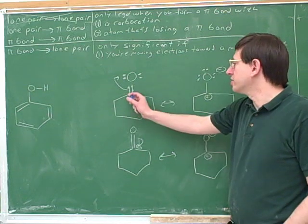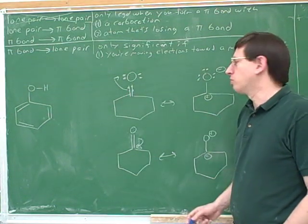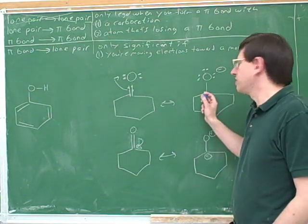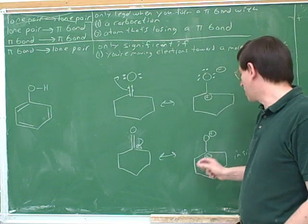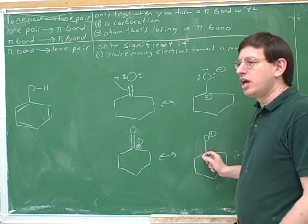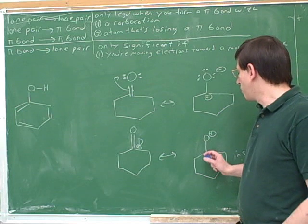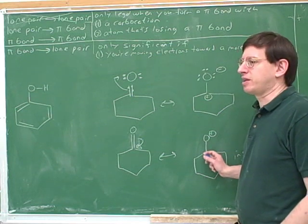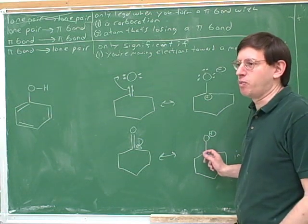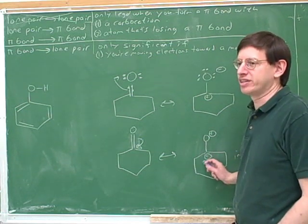For example, how much charge is there on this carbon? Well, it's a weighted average of this zero charge, this positive one charge, and this negative one charge. When you take a weighted average, what would the weights be? The weight on this insignificant structure would be something like 0.001 — a very small weight — so it's going to play hardly any role.